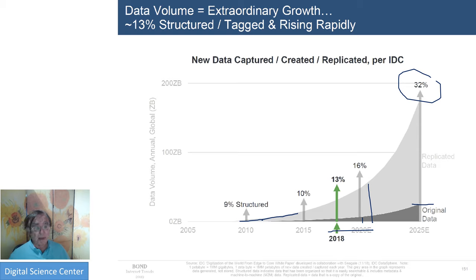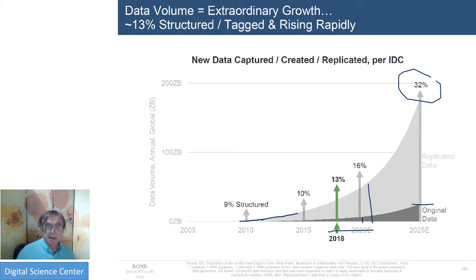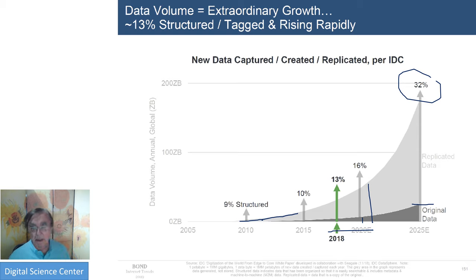The largest source of science data is the Large Hadron Collider, which is not even measured in exabytes — it's measured in about 100 petabytes a year. That's a tiny fraction of the amount of commercial data, because there is only one accelerator but there are seven billion people, and these commercial numbers are multiplied by people.